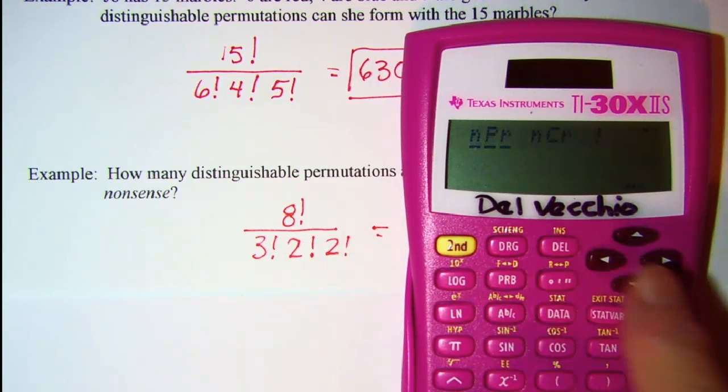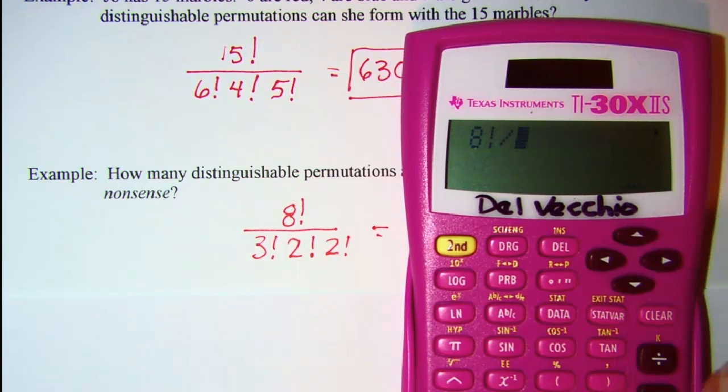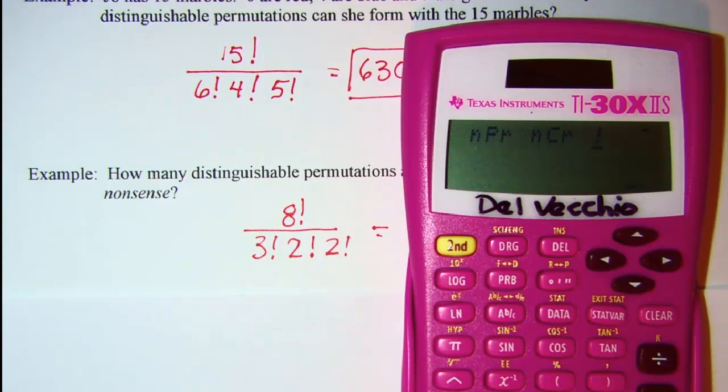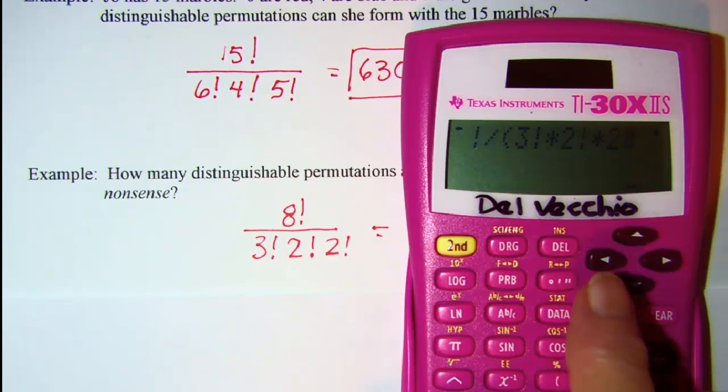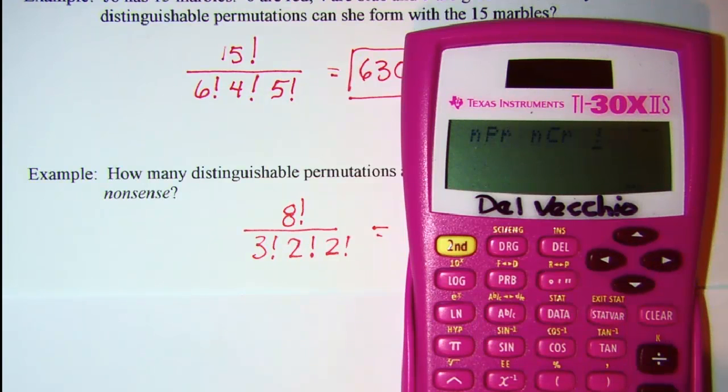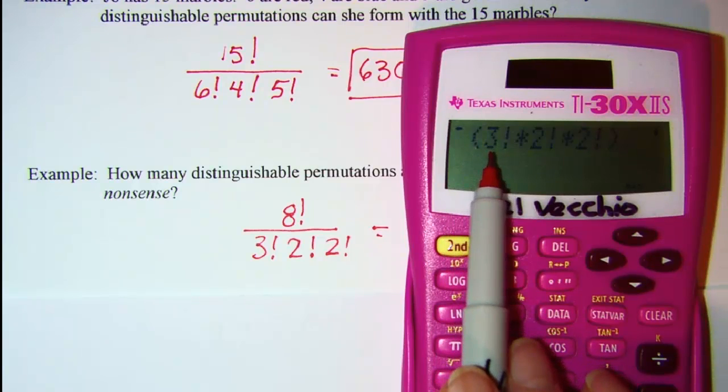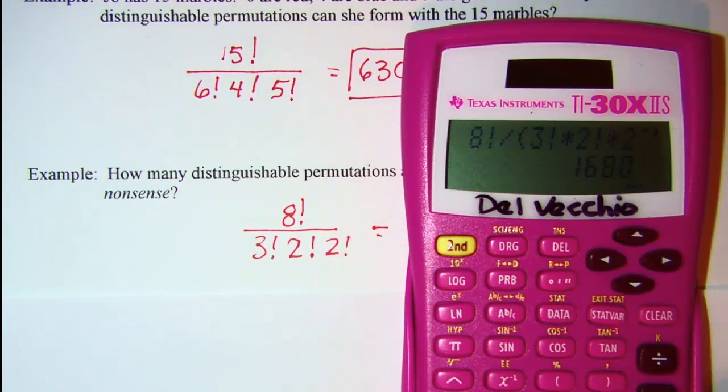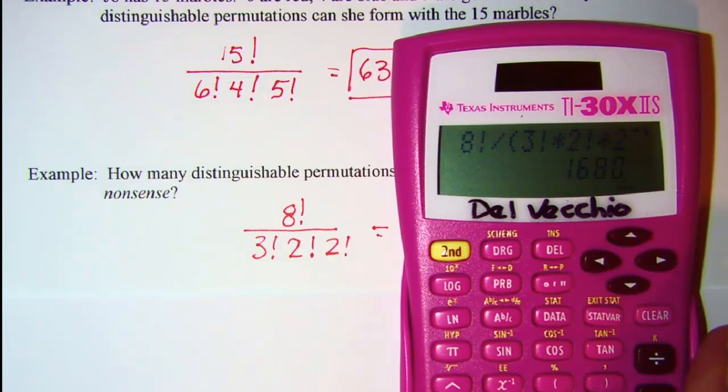8 factorial divided by, and again I need to open my parenthesis, 3 factorial times 2 factorial times 2 factorial. I closed my parenthesis. Now I could do this without a calculator. I know that 3 factorial is 6, and 2 factorial is 2, so I have 6 times 2 times 2. But since I have it in my calculator, let's go ahead and use that. 1,680.